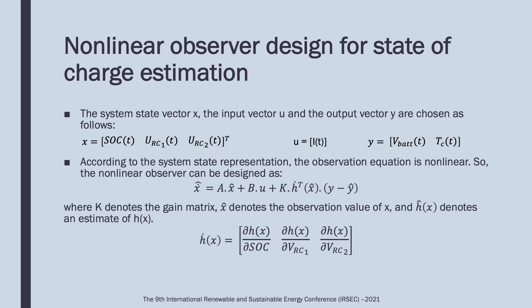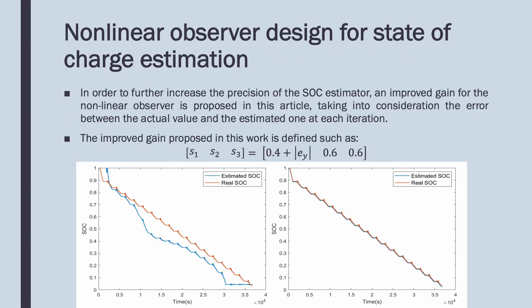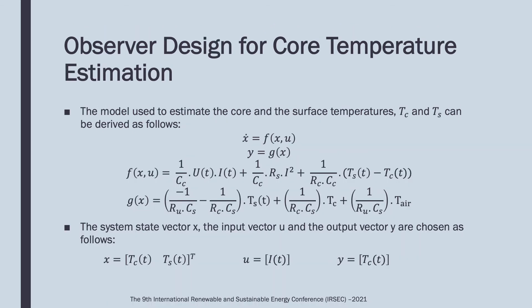According to the system state representation, the observation equation is nonlinear, so the nonlinear observer can be designed as shown in the slide. In order to further increase the precision of the state estimator, an improved gain for the nonlinear observer is proposed. The model used to estimate the core and surface temperatures can be derived as presented in the slide.